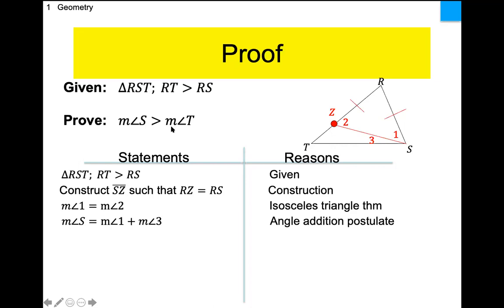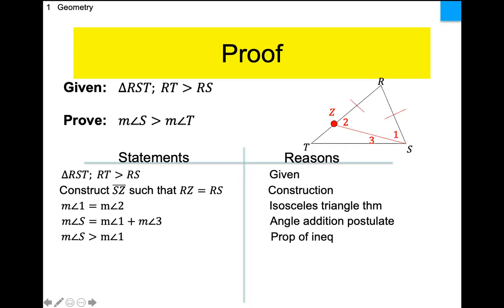Our proof involves an inequality, so we've had equality, equality, equality — we need to get an inequality somewhere. They're going to take the statement that angle S equals angle 1 plus angle 3 and apply the inequality property that says if the left side equals the right side and the right side is made up of two or more things, then the left side is bigger than either one of those things. For example: 4 equals 1 plus 3, so 4 is bigger than 1 and bigger than 3. So angle S is bigger than angle 1.